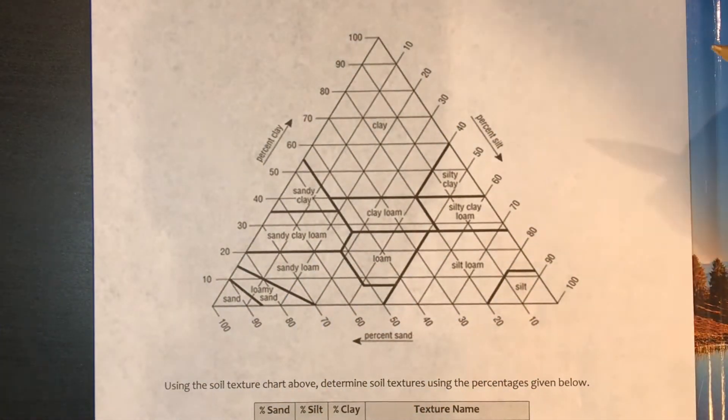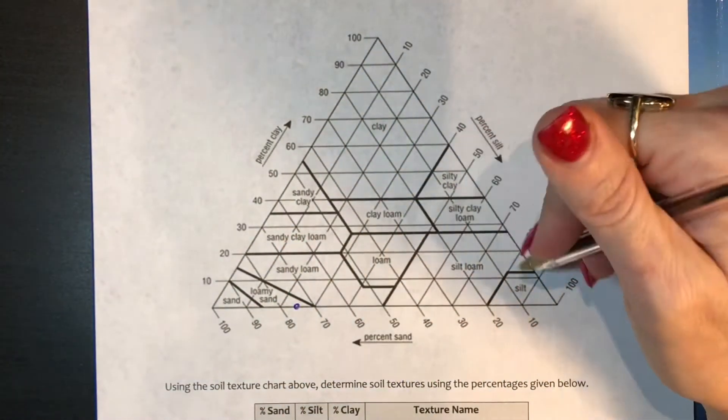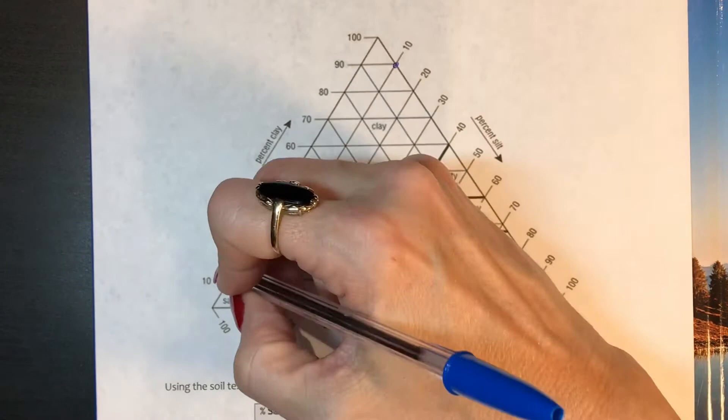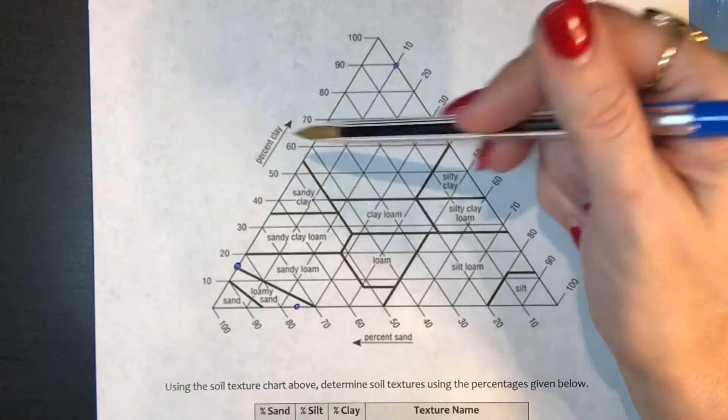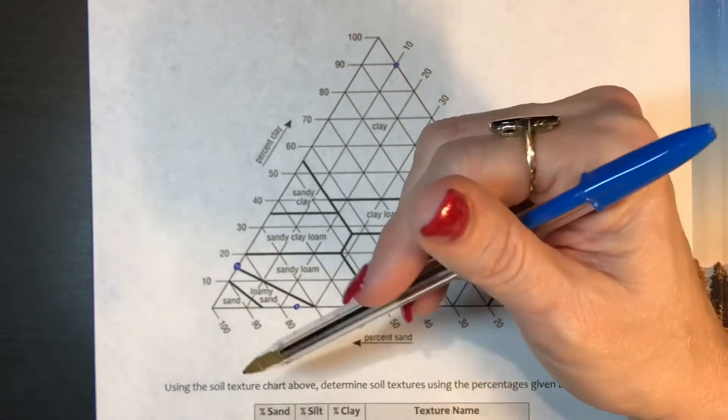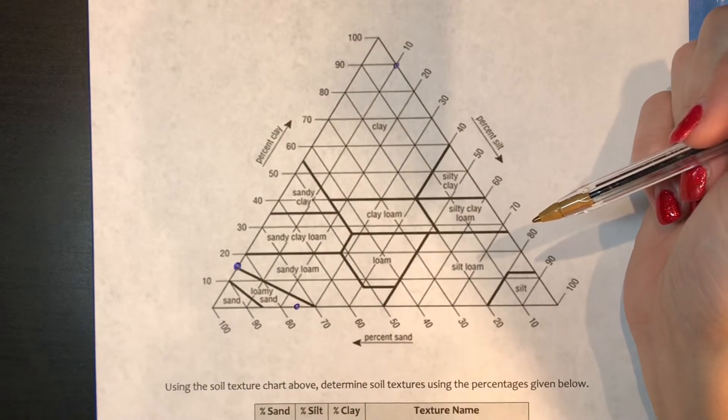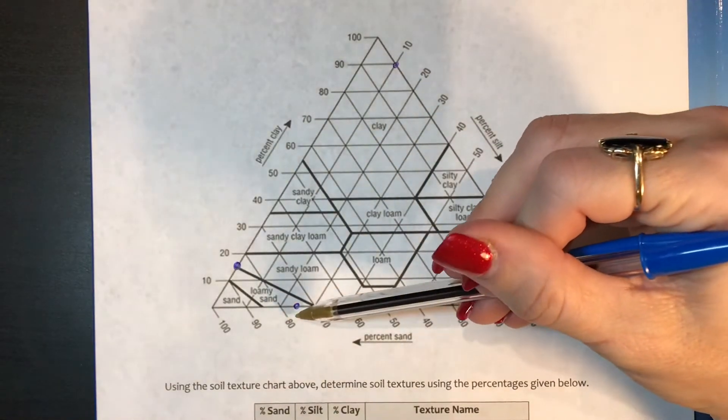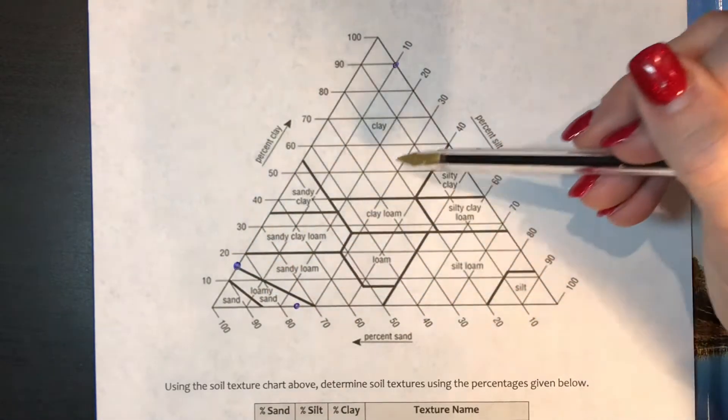Notice that this triangle has three equivalent scales on it. So you go from 0% to 100% on each side. These arrows also tell you how to read this. So let's go ahead and discuss. Let's go ahead and find each one of those numbers. You could go in this direction, you can follow lines in this direction, you can follow lines in this direction.